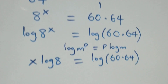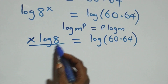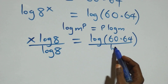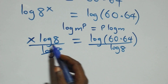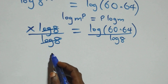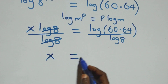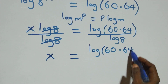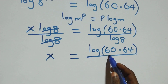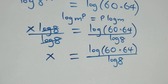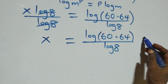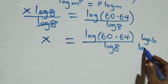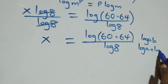We divide both sides by log eight. Log eight cancels on the left, leaving x equals log of sixty times sixty-four over log eight. This follows the log product rule: log of a times b equals log a plus log b.